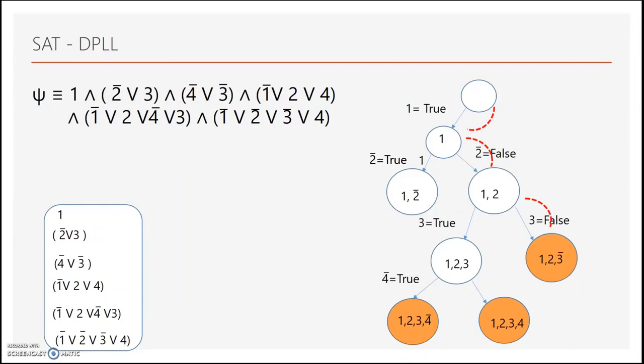At this point the formula is unsat again and we backtrack. At this point we have discovered all the possible combinations for 3 and hence we backtrack again. At this point we have assigned all the possible values to 2 bar and hence we backtrack again. We know that 1 is a unit clause. Hence, setting it to false will make our whole formula unsatisfiable. Therefore, this whole formula is unsatisfiable.